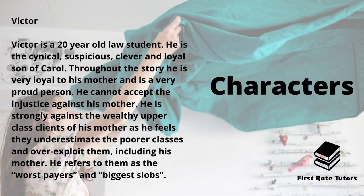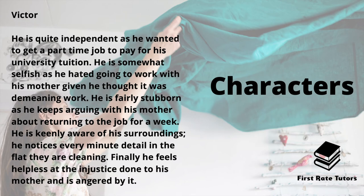The other character is Victor, a 20-year-old law student. He's quite cynical, suspicious, clever and loyal to his mother. Throughout the story he's proud and can't accept the injustice done against her. He's strongly against the wealthy upper-class clients, feeling they underestimate and over-exploit the poorer classes, referring to them as the worst payers and the biggest slobs. Victor is quite independent — he wanted to get a part-time job at university — and somewhat selfish, as he hated going to help his mother because he found it demeaning. He's fairly stubborn, arguing with his mother about returning to this particular client, and keenly aware of his surroundings, noticing every minute detail in the flat. It's him who finds the earrings.